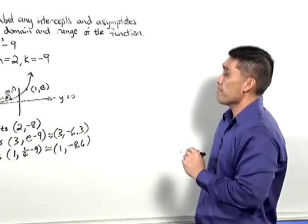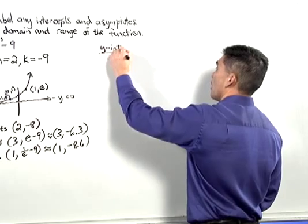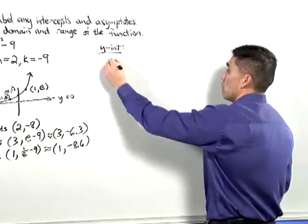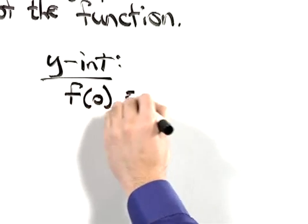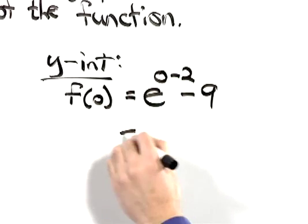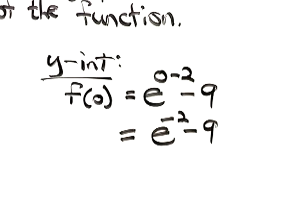Let's now find the intercepts. Let's start with the y-intercept. The y-intercept occurs when x is 0. So f of 0 equals e to the 0 minus 2 power minus 9, which is e to the negative 2 minus 9.